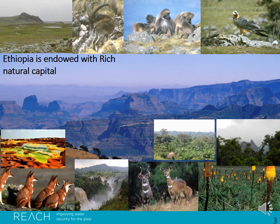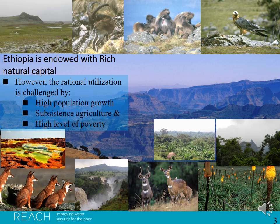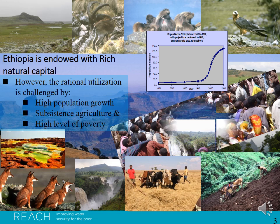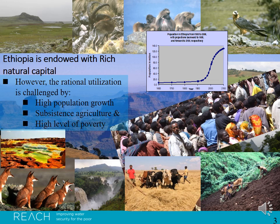As you can see in the background picture, Ethiopia is endowed with rich natural capital including biodiversity. However, the rational utilization is challenged by high population growth, subsistence agriculture, and high levels of poverty. Right now we are about 105 million people and about 85 percent are dependent on subsistence agriculture, which applies huge pressure on the landscape.